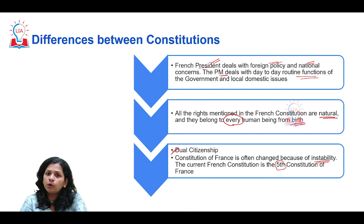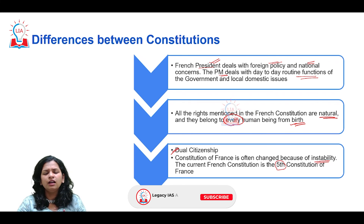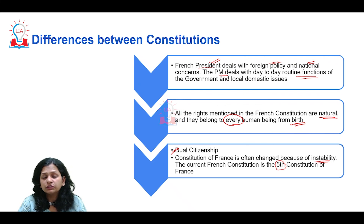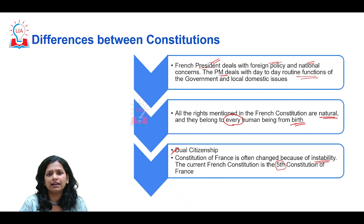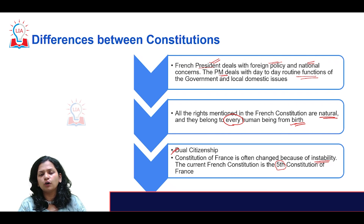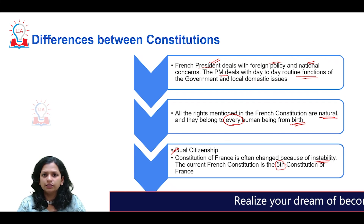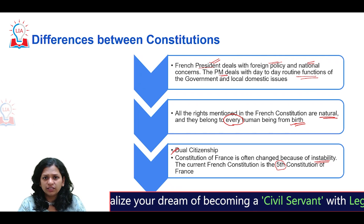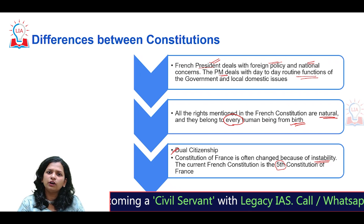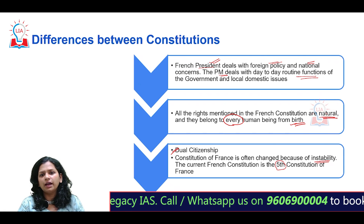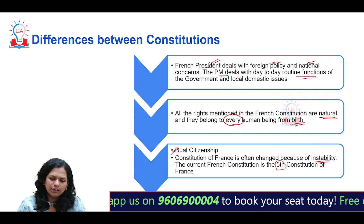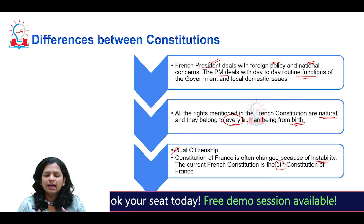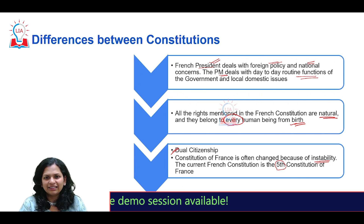India has managed to sustain democratic principles, hold proper periodic elections, and maintain the constitutional fabric despite issues like booth capturing, muscle power, and money power. Even during the period of Emergency, the sanctity of the constitution was maintained, with the Supreme Court stepping in to curtail unconstitutional changes and amendments. This kind of continuous upheaval and complete revamping of the constitution, as experienced in France, has not happened in India.